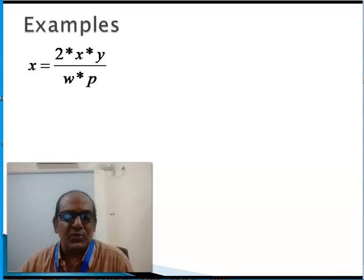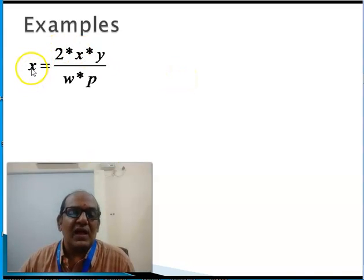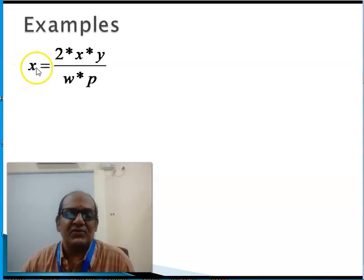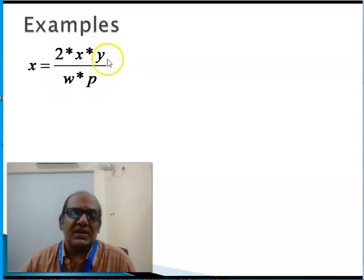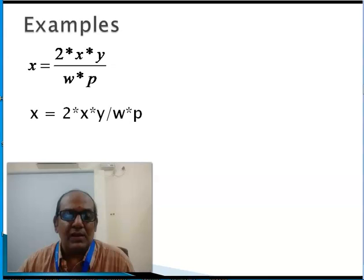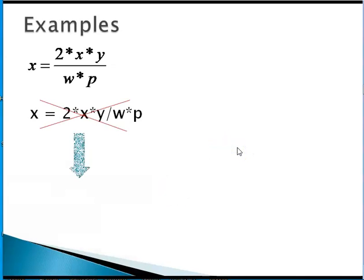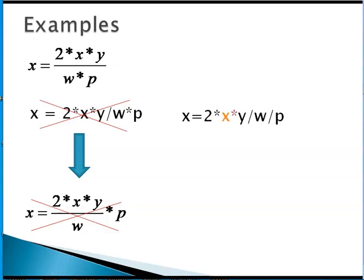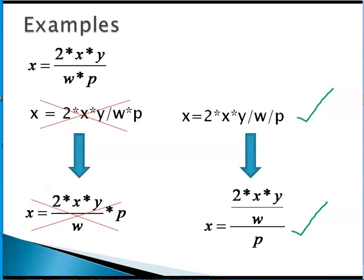Let us consider an example mathematical equation as given here. The value of x on the left hand side of equal to sign is computed using the current values of x, y, t and w. So this expression is evaluated and the result is put in x. The moment we see such an equation, we will be tempted to write an equation as shown over here: x is equal to 2 star x star y by w star p. That is, what is the order in which we see x star 2 star x star y divided by w multiplied by p.